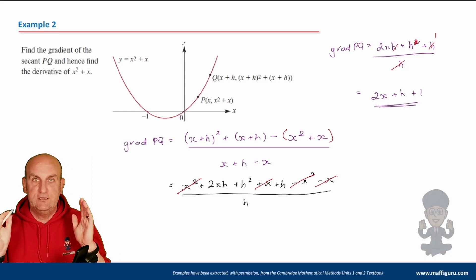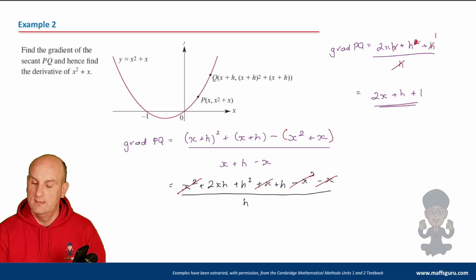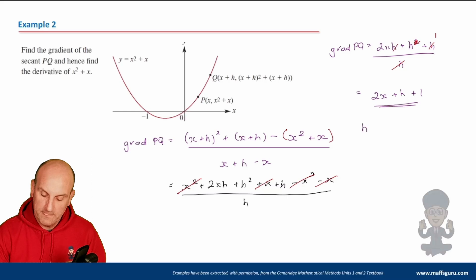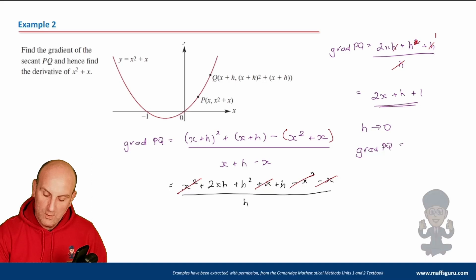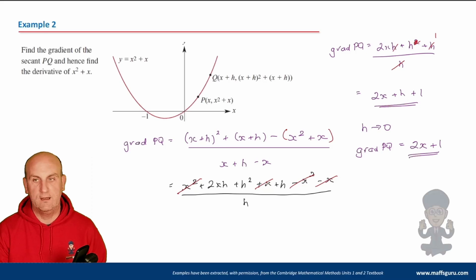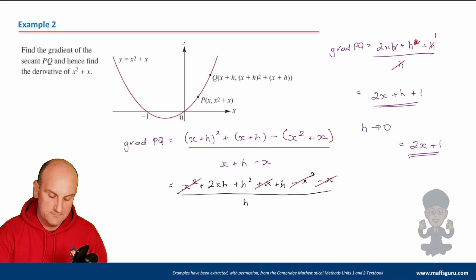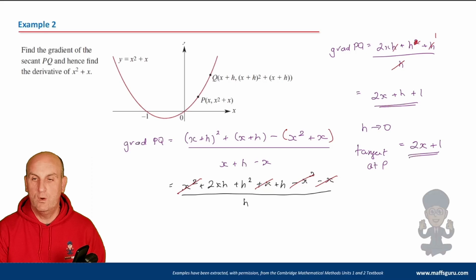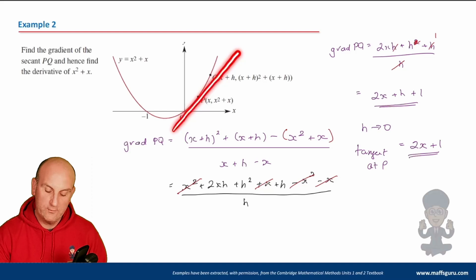So the gradient of PQ simplifies to 2xH + H² + H all over H. Cancelling one H from each term gives 2x + H + 1. As H gets smaller and smaller toward zero, the gradient of the tangent at P becomes 2x + 1.